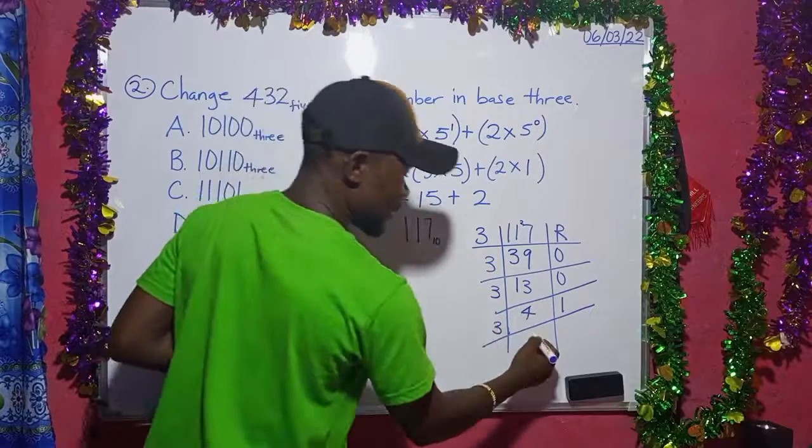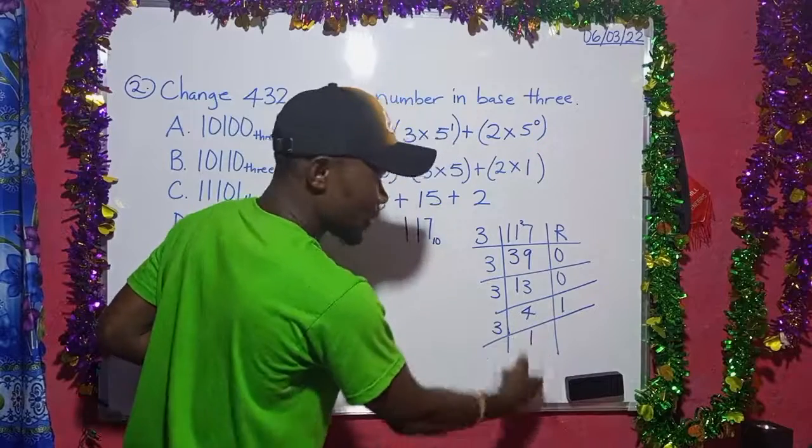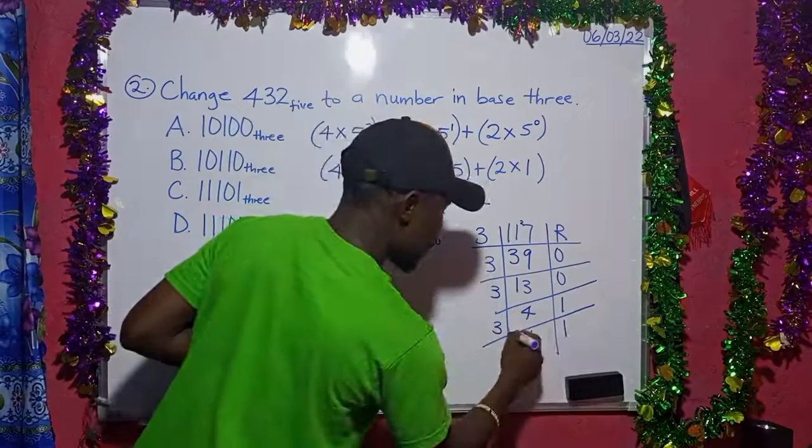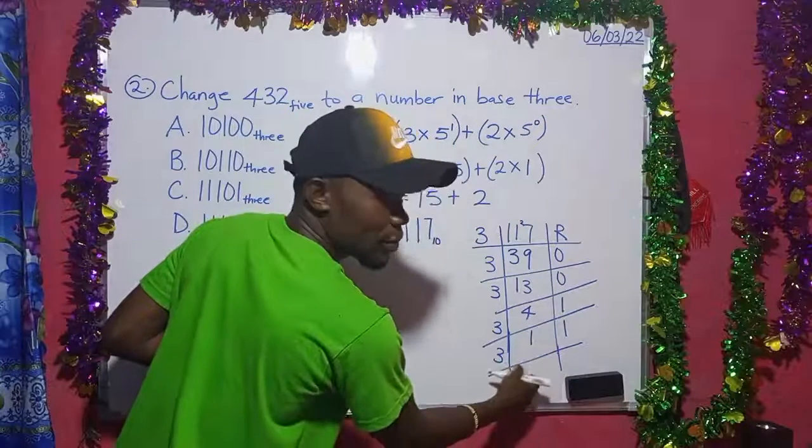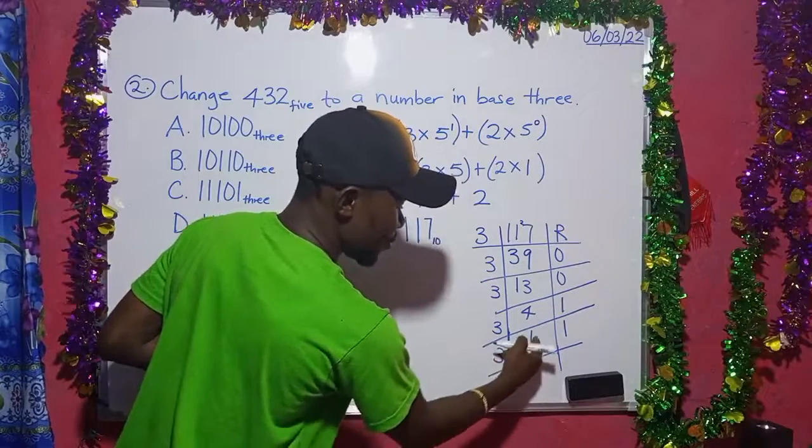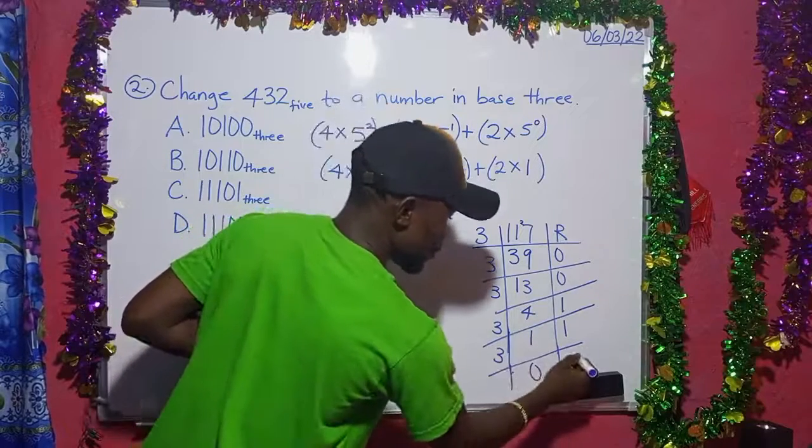So we bring this 3 here. 4 divided by 3 is 1, remainder 1. 3 going to 1 is 0 times. 1 minus 0 is 1.